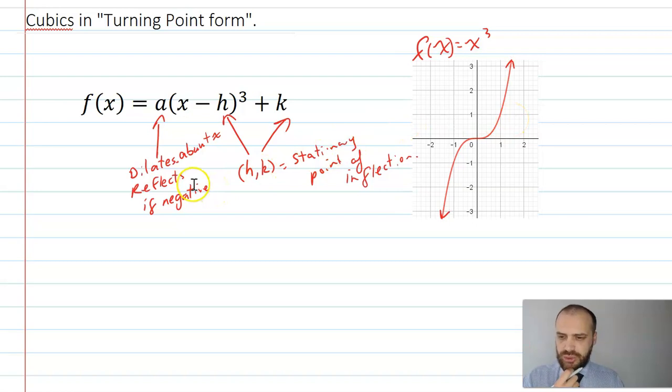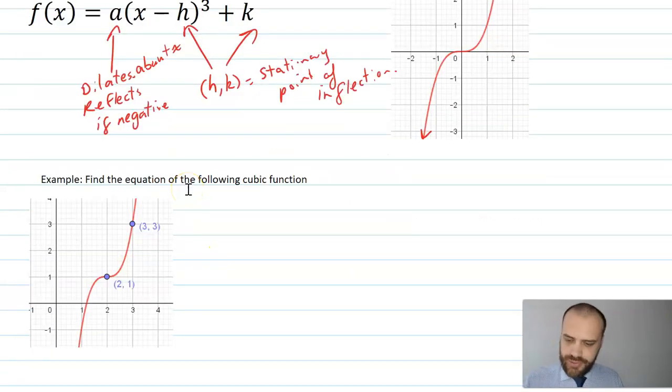That's really all we need to talk about when it comes to cubics in turning point form. Now, obviously, in the same way that if you know some information about one of those equations, you should then be able to determine its equation. If you knew the h and k value, and you knew another point, you could find out what the a value was.